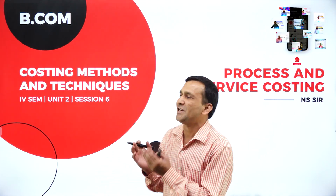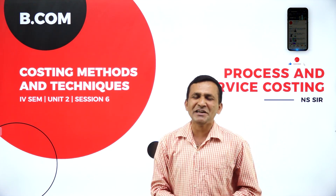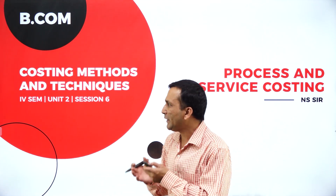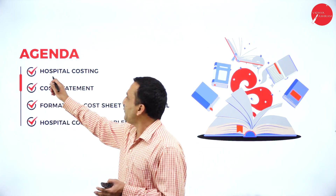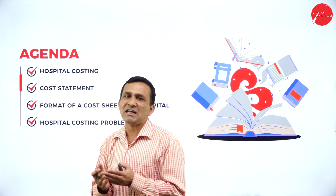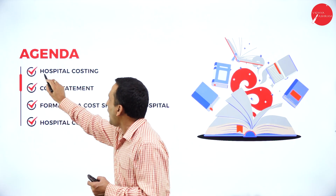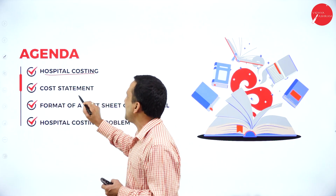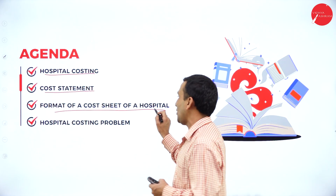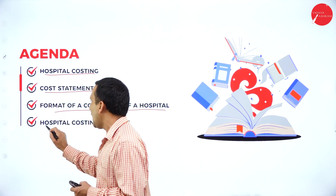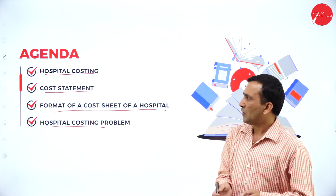In the last session, which was related to service costing, we covered transportation-related problems. Today my agenda is, under service costing, we are going for the next topic after transportation: hospital costing and cost statement — the format of the cost sheet or statement for the hospital, and there is one problem for hospital costing.